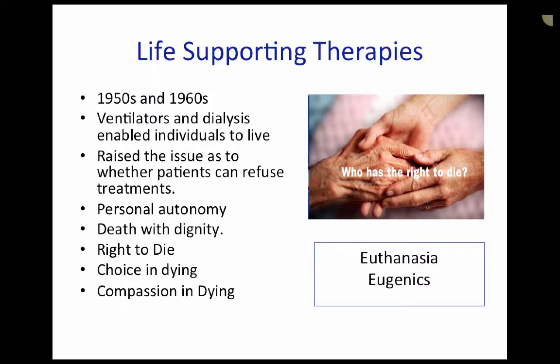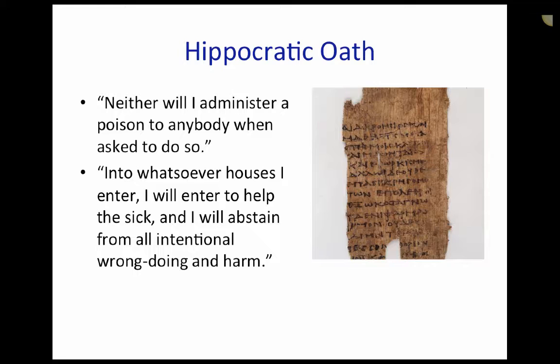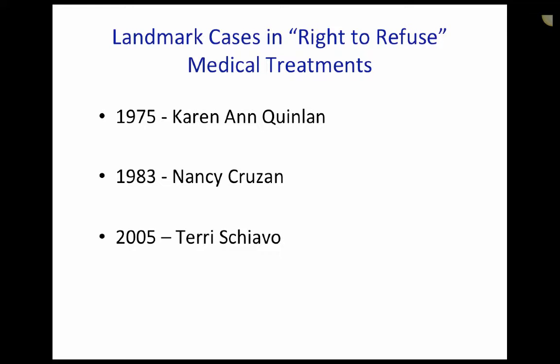However, the recent experiences with euthanasia and eugenics in the 1930s and 1940s were raised as concerns. Furthermore, many were influenced by the writings in the Hippocratic Oath, which included: "Neither will I administer a poison to anybody when asked to do so. Into whatsoever houses I enter, I will enter to help the sick, and I will abstain from all intentional wrongdoing and harm." But how does one define harm? As is often the case, it took the legal system to give authority to the moral arguments. As such, it is instructive to review the landmark legal cases involving the right to refuse medical treatments.